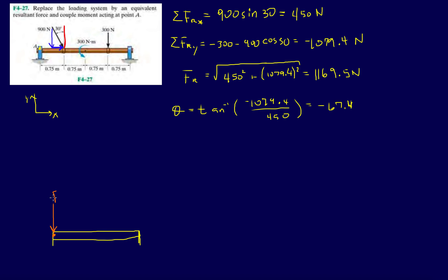Then I have 450, this is FR_X. This plus this gives me a final vector, kind of like the previous problem we did. This is FR.